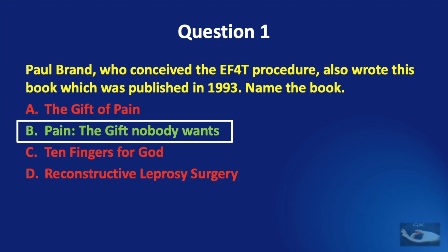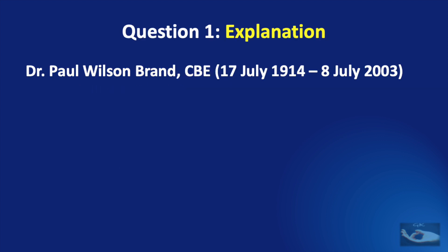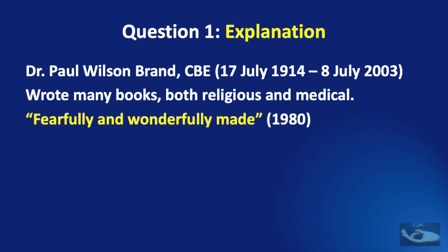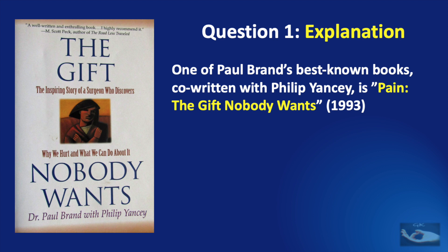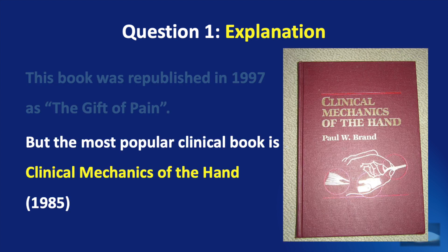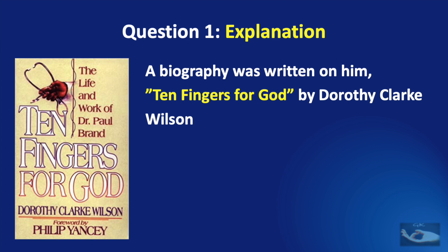The correct answer is Pain, the gift nobody wants. Dr. Paul Wilson Brand wrote many books, both religious and medical, like Fearfully and Wonderfully Made in 1980, In His Image, and The Forever Feast. His best-known book, co-written with Philip Yancey, is Pain, the gift nobody wants, published in 1993, republished in 1997 as The Gift of Pain. His most popular clinical book is Clinical Mechanics of the Hand, published in 1985. A biography, 10 Fingers for God, was written by Dorothy Clark Wilson.